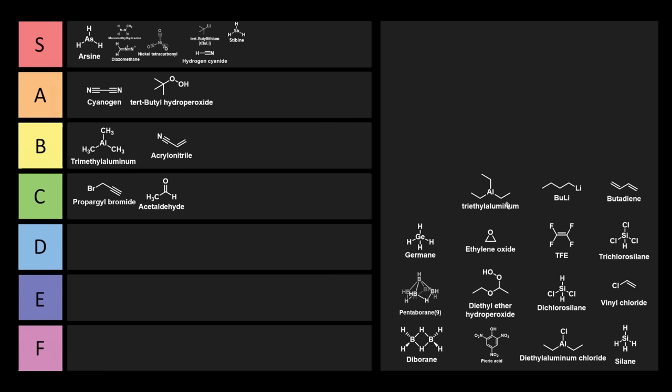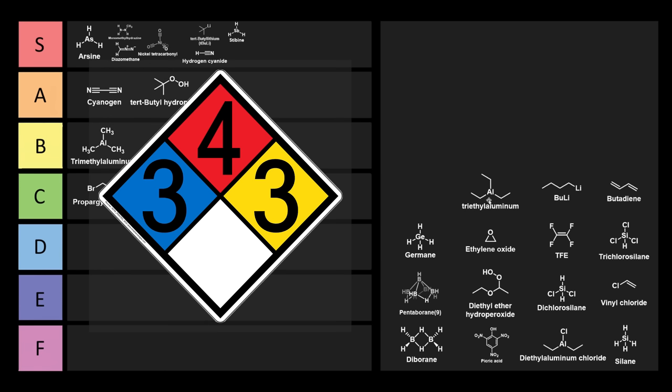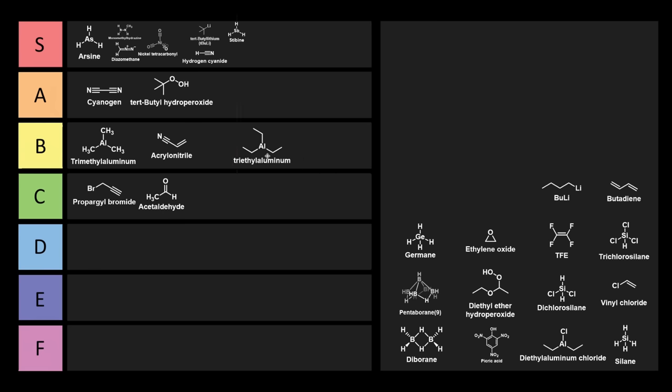Similar to trimethylaluminum, we have triethylaluminum. The advantage with triethylaluminum is it's a little bit less volatile, these bulky groups might make it more desirable as a Lewis acid, and it can also be used as a nucleophilic ethylating agent. It's highly pyrophoric. This is another liquid flamethrower chemical. This chemical can go into the same tier as trimethylaluminum, because it has essentially the same hazards.